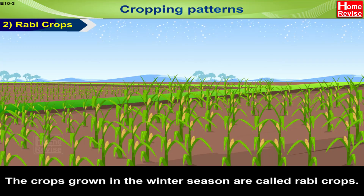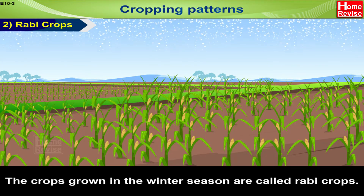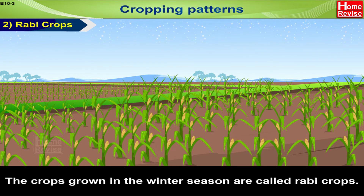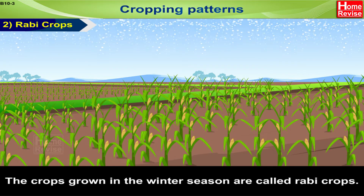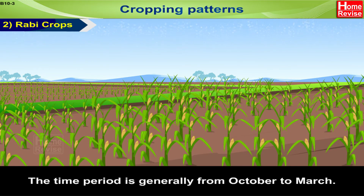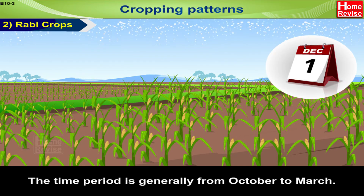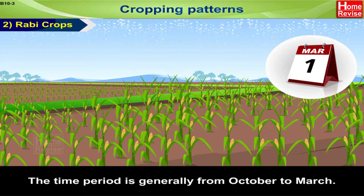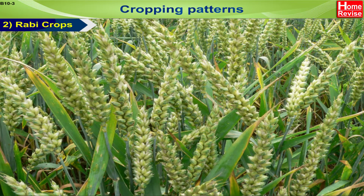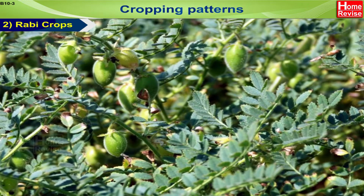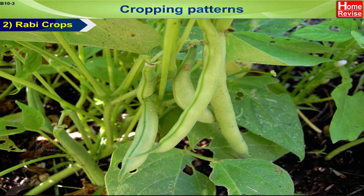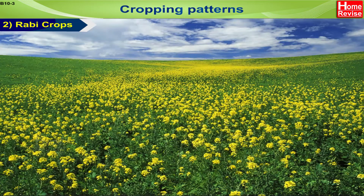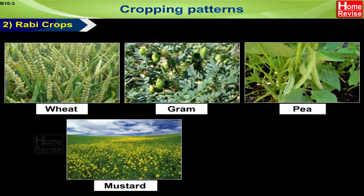Rabi crops. The crops grown in the winter season are called Rabi crops. The time period is generally from October to March. Examples of Rabi crops are wheat, gram, pea, mustard and linseed.